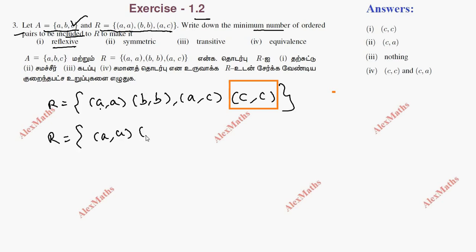So we have to include (A,A), (B,A), (C,C). So this is in reverse order.